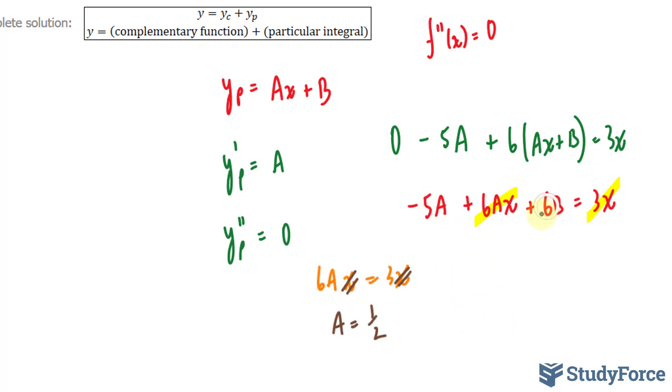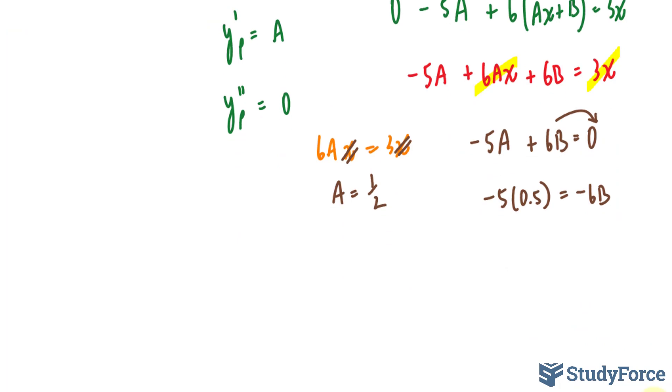Now I'll equate these two, where I have negative 5a plus 6b equals 0. Bringing this over, we have negative 5, and our a value is half, don't forget, is equal to negative 6b. Dividing both sides by negative 6, we'll end up with, using our calculator,